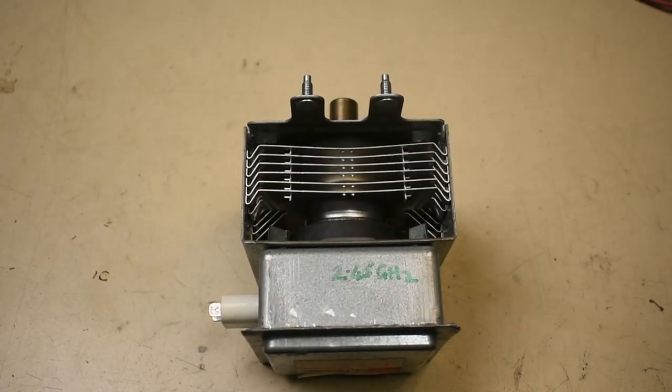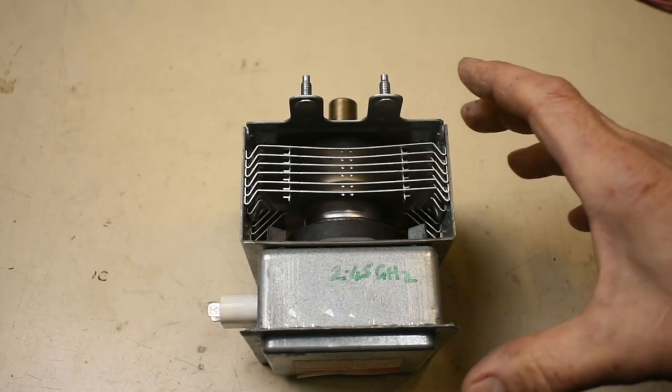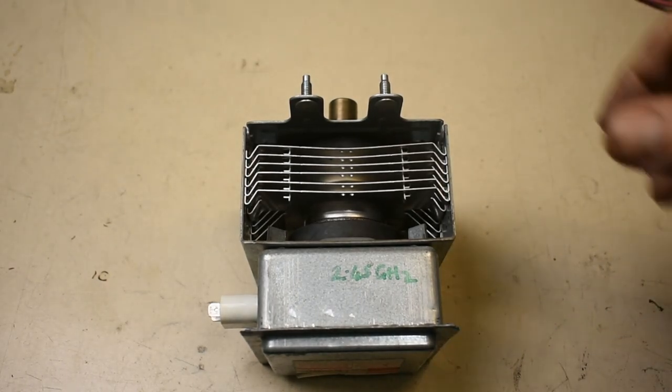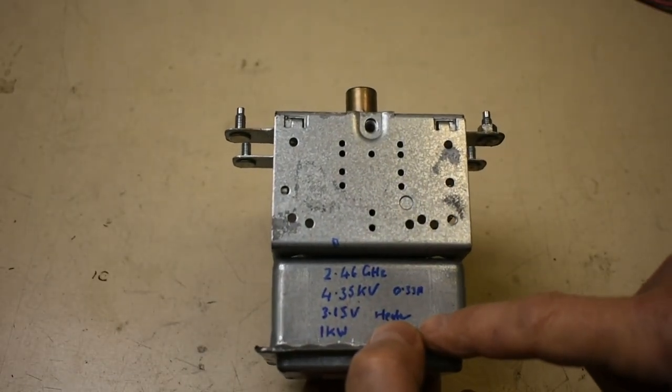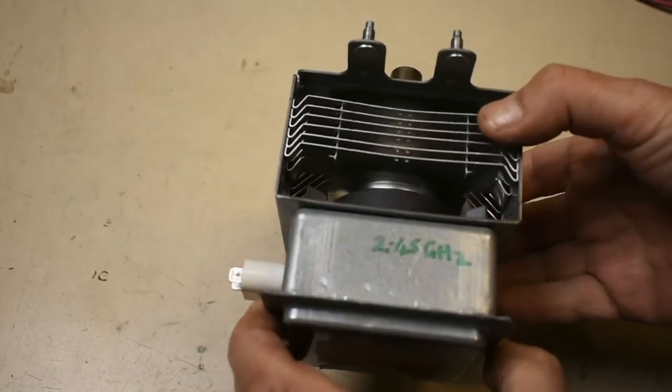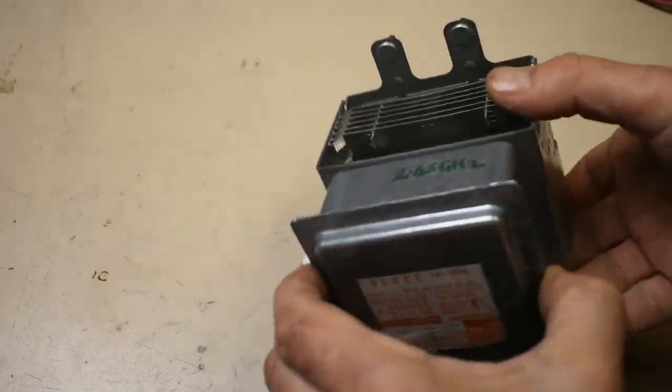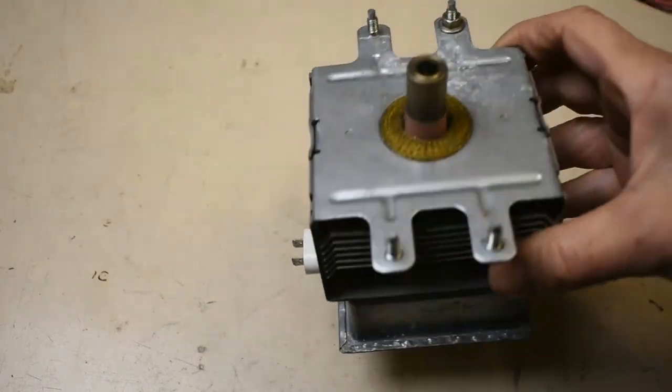Oh yeah, this is a kind of revisit of an experiment I did some time ago. This is an old microwave oven style magnetron. I've used this for a few experiments. Its ratings are as such on here. So it's about 2.45 gigahertz and it's about an anode voltage of 4.35 kV.